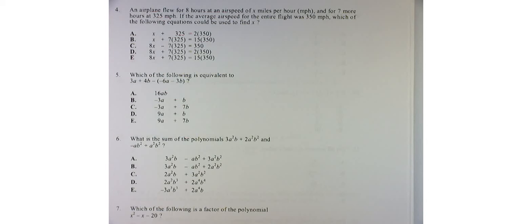An airplane flew for 8 hours at an airspeed of x miles per hour and for 7 hours at 325. The average speed was 350 miles per hour. Find the equation you could use to find their flight.